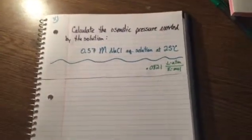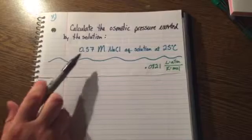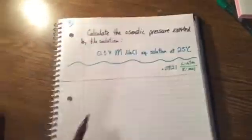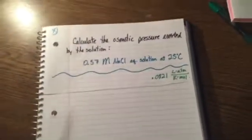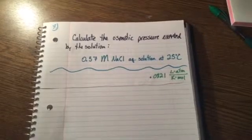Calculate the osmotic pressure exerted by the solution. 0.57 molarity of sodium chloride, an aqueous solution at 25 degrees Celsius.